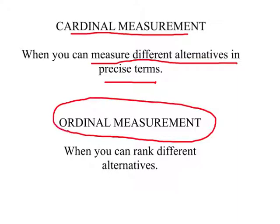Another way to look at measurement is called ordinal measurement, where we can rank different alternatives. For example, even if we do not know the exact distances, we can say Brazil is further from the US relative to Mexico, or that today is warmer relative to yesterday. We do not have to know the precise value — we just rank different alternatives.